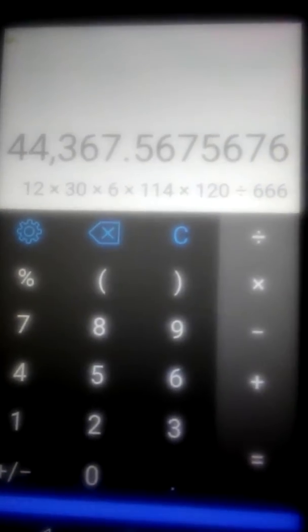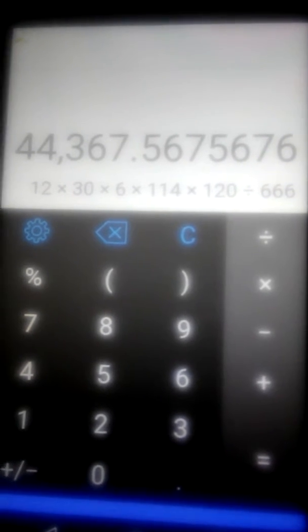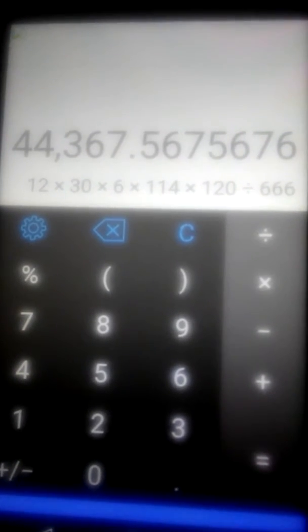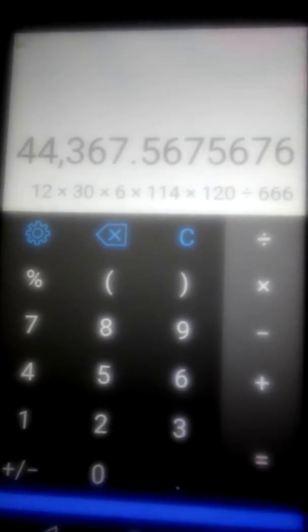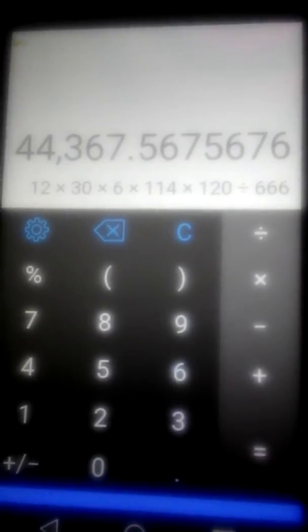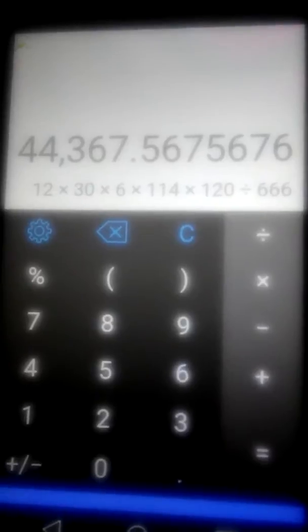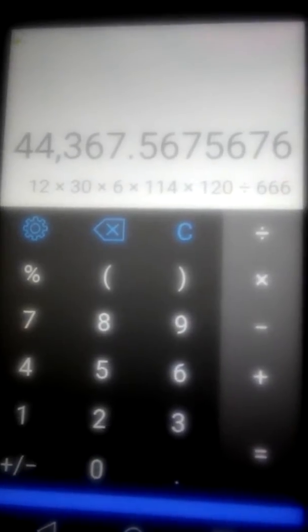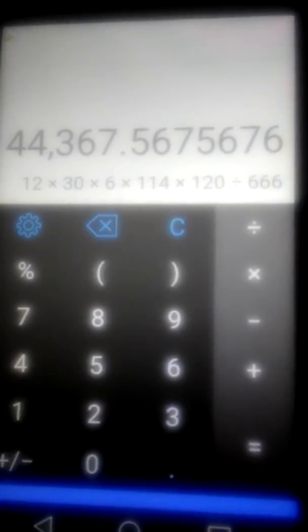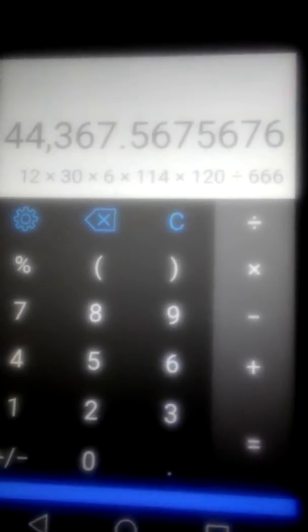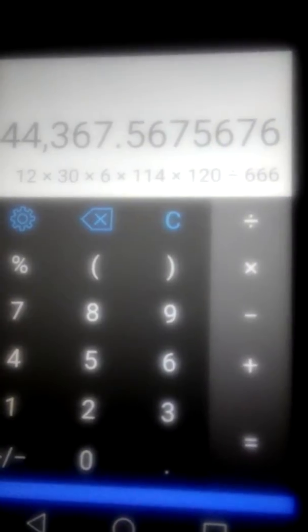The calculation in this video: the word beast found in Revelation 13:18, taking the letters of the word beast using the base 6 gematria. The answer for the word beast multiplied, being divided by 666.